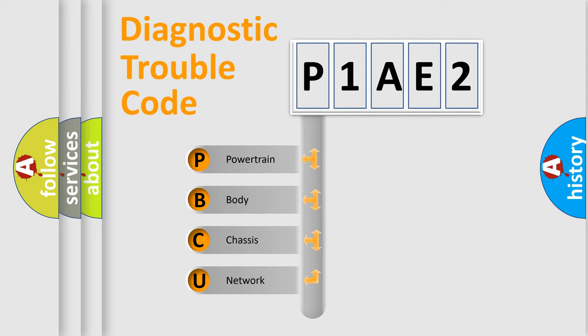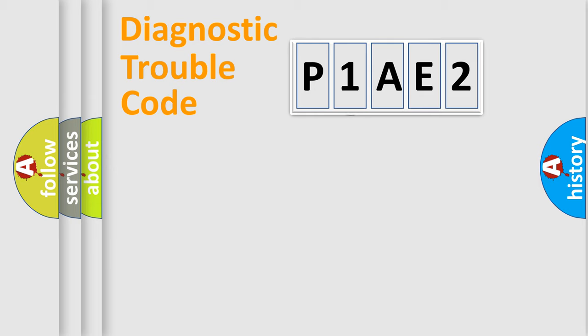We divide the electric system of automobile into four basic units: Powertrain, Body, Chassis, and Network. This distribution is defined in the first character code.